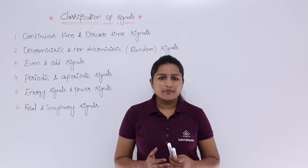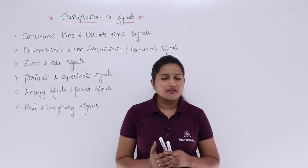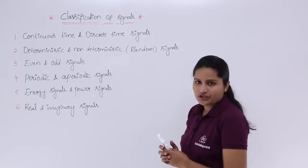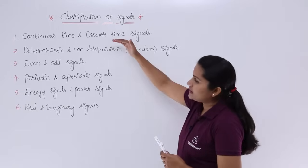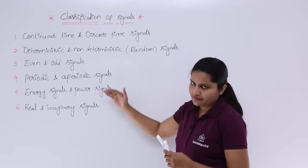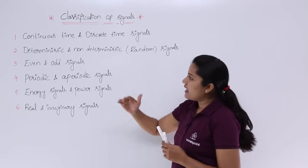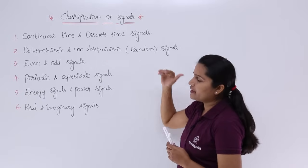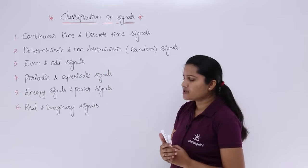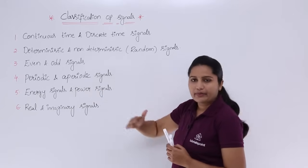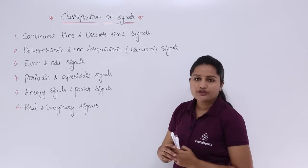In this video we are going to discuss the classification of signals. Basically, signals are classified into 6 different types according to their nature: continuous time and discrete time signals, deterministic and non-deterministic (random) signals, even and odd signals, periodic and aperiodic signals, energy and power signals, and real and imaginary signals.